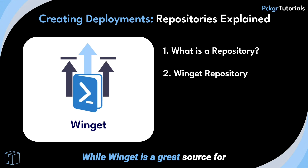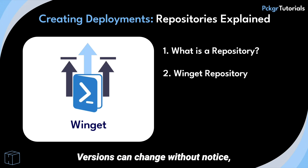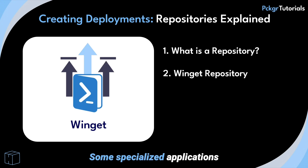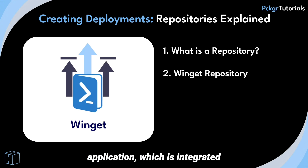While Winget is a great source for widely used applications, as a public repository it does have limitations. Apps rely on vendor URLs, which can sometimes break. Versions can change without notice, impacting deployment stability. Some specialized applications are not available in Winget. Winget applications rely on Winget Preinstall as a dependency application, which is integrated into Packager's deployment processes.